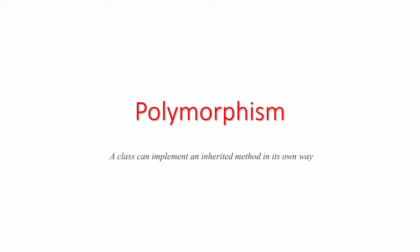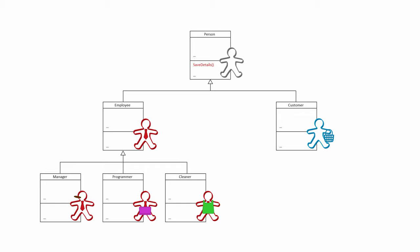The final fundamental concept of object-oriented programming is polymorphism. Polymorphism means that a class can implement an inherited method in its own way. The person class at the base of this hierarchy has a method which will save details of any object created from the person class, perhaps to a database. Thanks to inheritance, all of the classes in this hierarchy do exactly the same thing. But it may be necessary for a customer's details to be saved differently, perhaps to a different database. Polymorphism allows for this. The customer class can override the workings of any method or property that it inherits with a new version of its own. Different forms of the same type of object with the same interface can behave in different ways. Polymorphism literally means many forms.